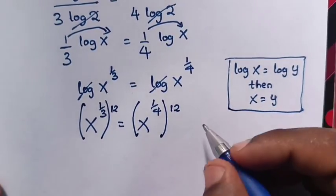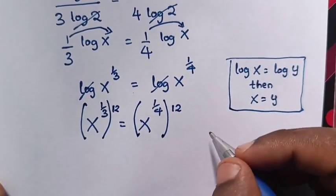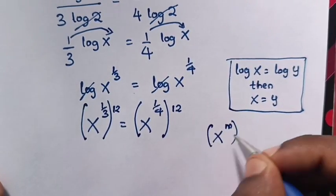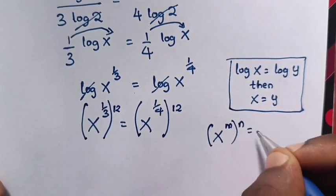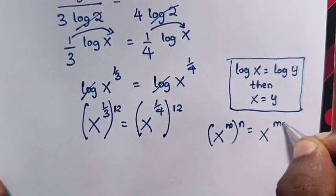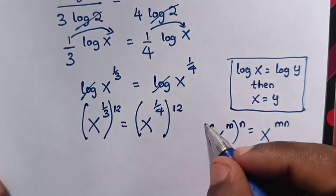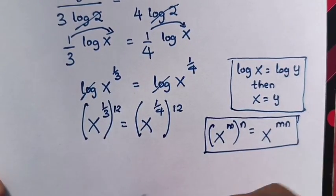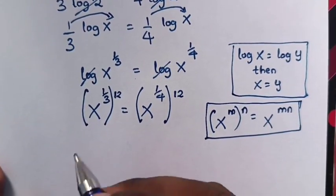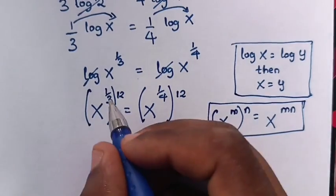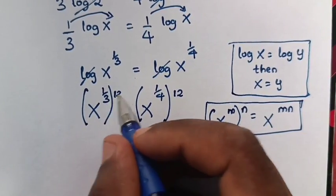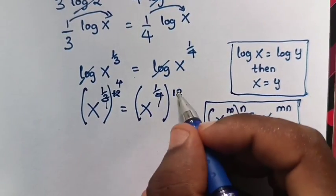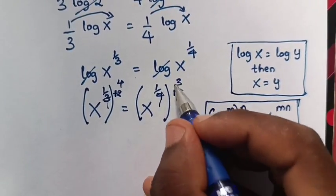So we will multiply both sides by the power of 12 in order to remove the fractions. We apply the exponential rule that x power m, bracket power n, is equals to x power m times n — so we multiply the powers. Simplifying: 1 over 3 times 12 gives 4, and 1 over 4 times 12 gives 3.